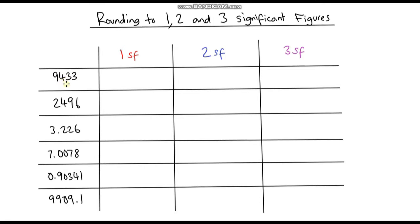Let's have a look at the first one: 9,433, and we're going to round that to one significant figure. The first thing to do is identify what the first significant figure is — the first significant figure is the 9, which is the first non-zero digit. Just like rounding to decimal places, we look at the digit to the right of that number. I've drawn a line here and we look at the 4. Because it's less than 5, we round down, so this stays at 9 — that gives us 9,000. We need to make sure we keep those zeros. The 4, 3 and 3 become zeros; we don't just remove them, as we need to maintain the value of the number.